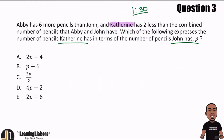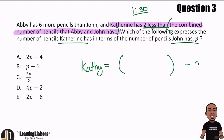Catherine has two less than the combined number of pencils that Abby and John have. Think about it like this: Cathy equals two less than — 'less than' means you're going to have something and subtract two afterwards. Two less than the combined number of pencils that Abby and John have, which would be Abby plus John.